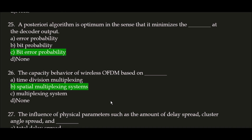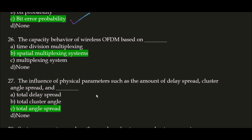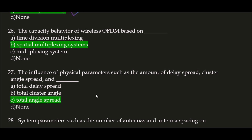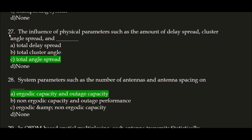The a posteriori algorithm is optimum in the sense that it minimizes the bit error probability at the decoder output; the correct answer is option C. Next question: the capacity behavior of wireless OFDM is based on — correct answer is option B — spatial multiplexing systems. Next question: the influence of physical parameters such as the amount of delay spread, cluster angle spread — option C is correct — and total angle spread.